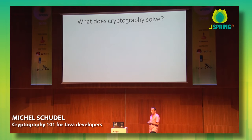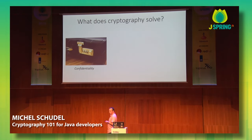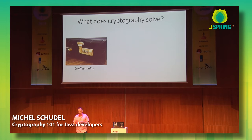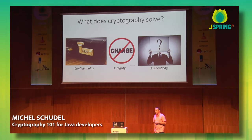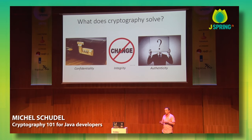If you look at modern cryptography, what does it try to solve? The first part is confidentiality — not knowing what the message entails. The second part is integrity, meaning you are absolutely sure the message has not been tampered with. And the third part is authenticity — you know who actually sent the message and you're 100% sure that is the person who sent it. So cryptography tries to solve these three parts.